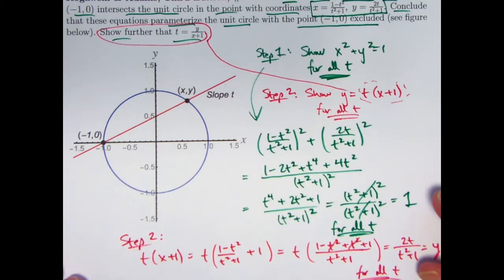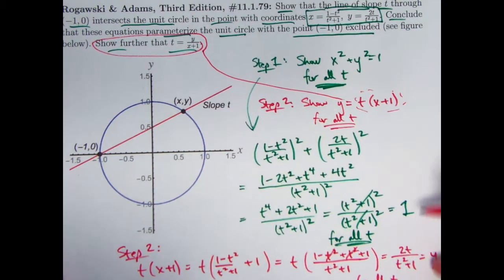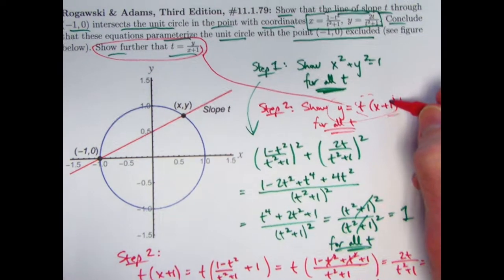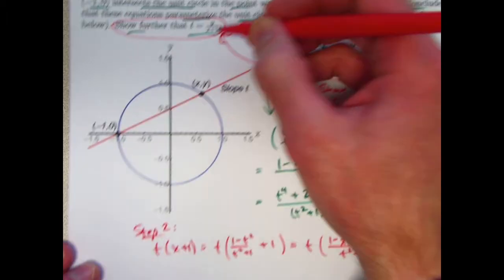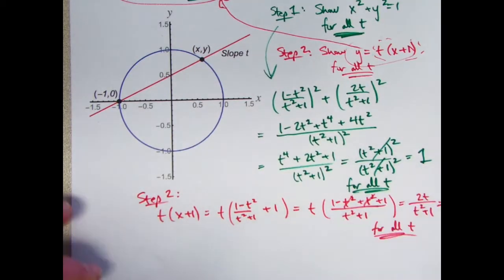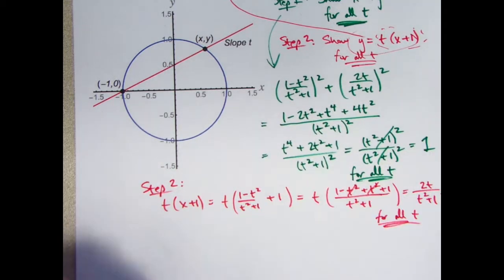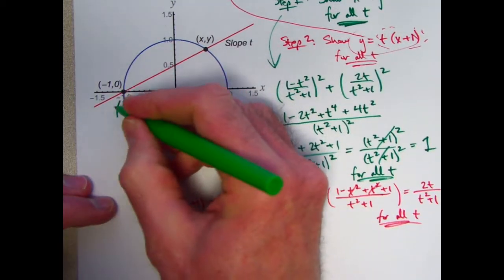Well, technically there are a couple more things to do. First of all, verifying this fact, again, just like I said before, does allow you to quickly verify t = y/(x+1). We should briefly explain why this point (-1,0) is excluded.